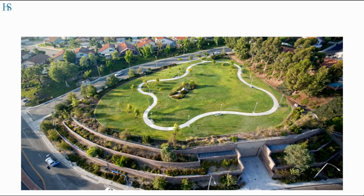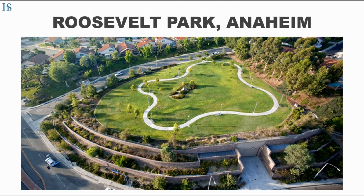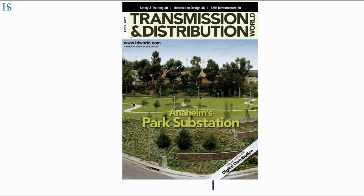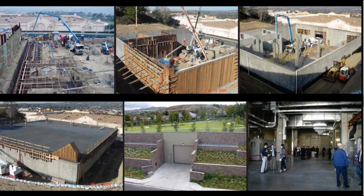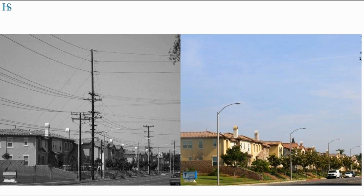Having briefed you about GIS, now try to recollect the first slide which showed a green park. So have you thought what the picture is all about? Well, let me tell you, it is Roosevelt Park in Anaheim, USA. Is there any connection between this park and the GIS system we went through? Surprised? Yes, actually it is Anaheim's Park substation. It is the first underground substation in USA, commissioned in 2006. In fact, along with this underground substation, the neighborhood has gone for underground transmission too.